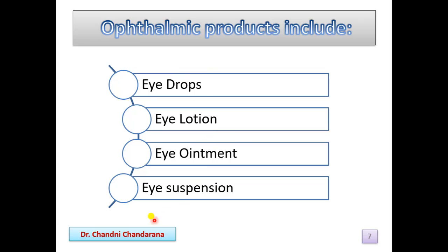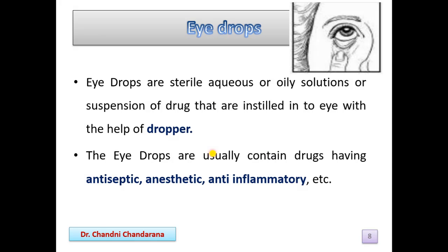Examples of ophthalmic products include eye drops, eye lotion, eye ointment, and eye suspension. As per the syllabus, we will discuss eye drops, eye lotion, and eye ointment in detail. In this part 1, we discuss eye drops in detail. Eye drops are sterile aqueous or oily solutions or suspensions of a drug that are instilled into the eye with the help of a dropper. Eye drops usually contain drugs with antiseptic, anesthetic, and anti-inflammatory properties.